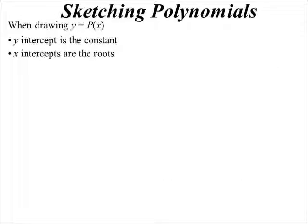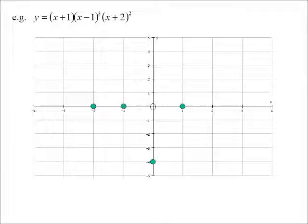The x-intercepts are the roots, the zeros. Sometimes we call it one, we call it the other. Fortunately, it's already factorized for me. So I know that the x-intercepts will be negative 1, 1, and negative 2. So we've got those.